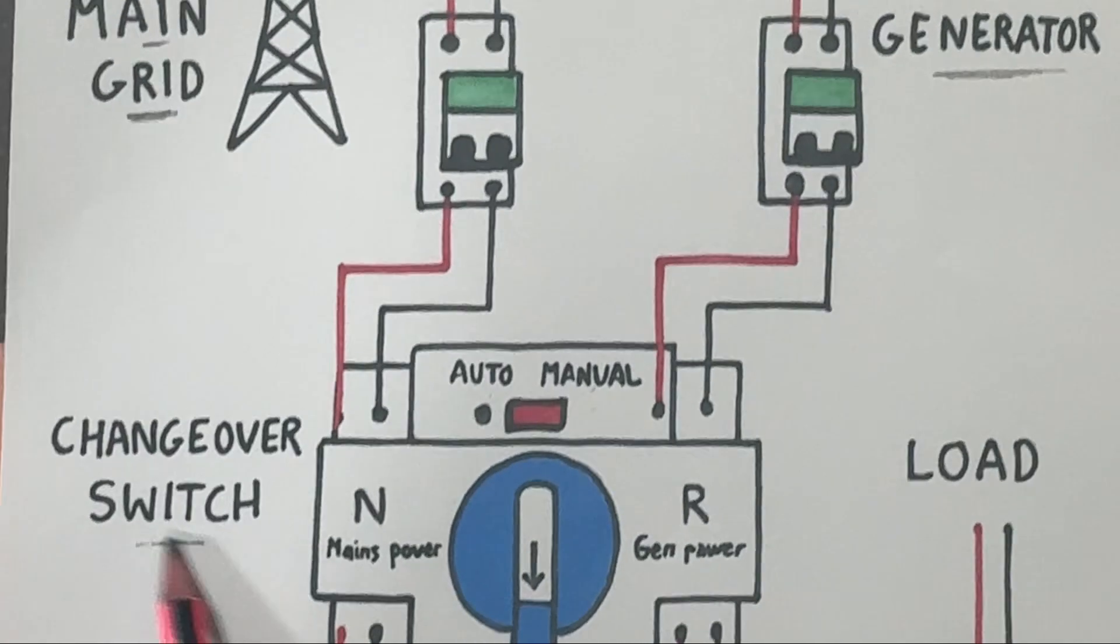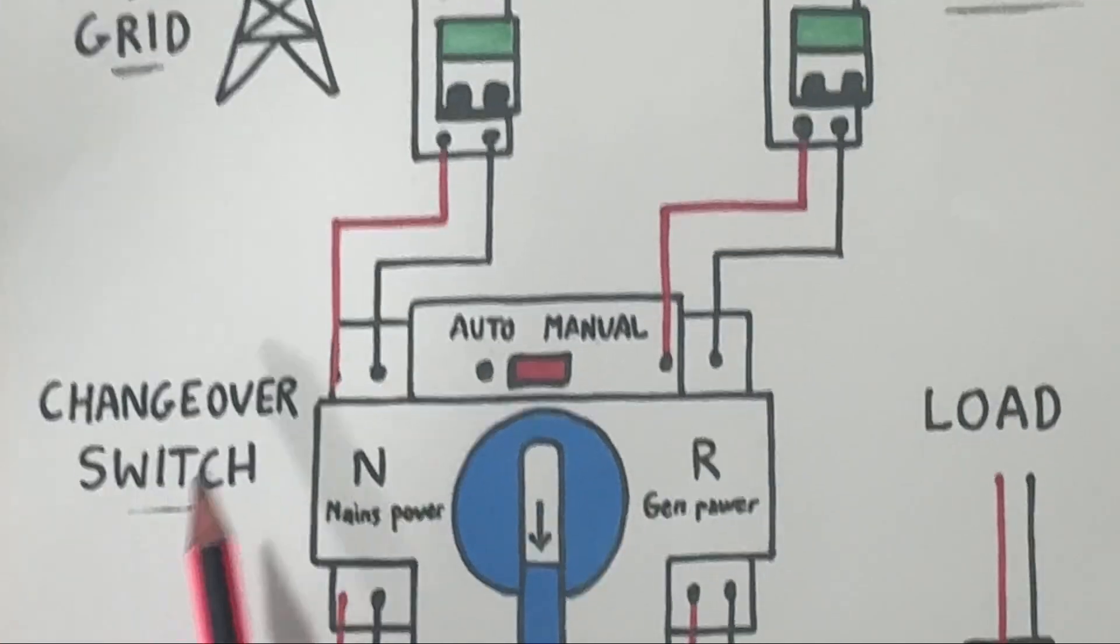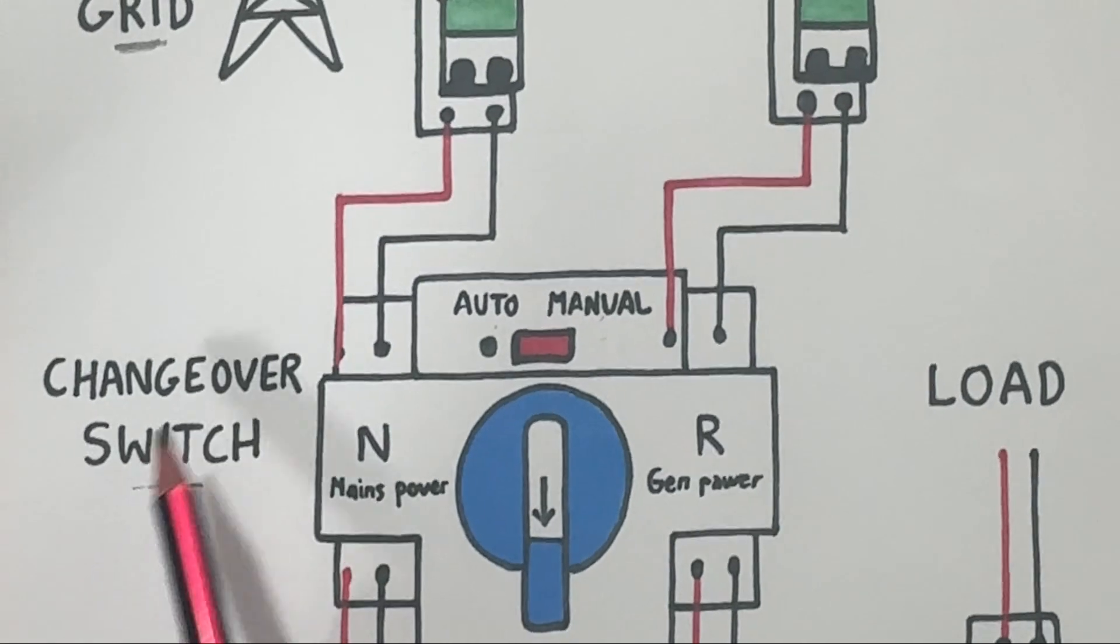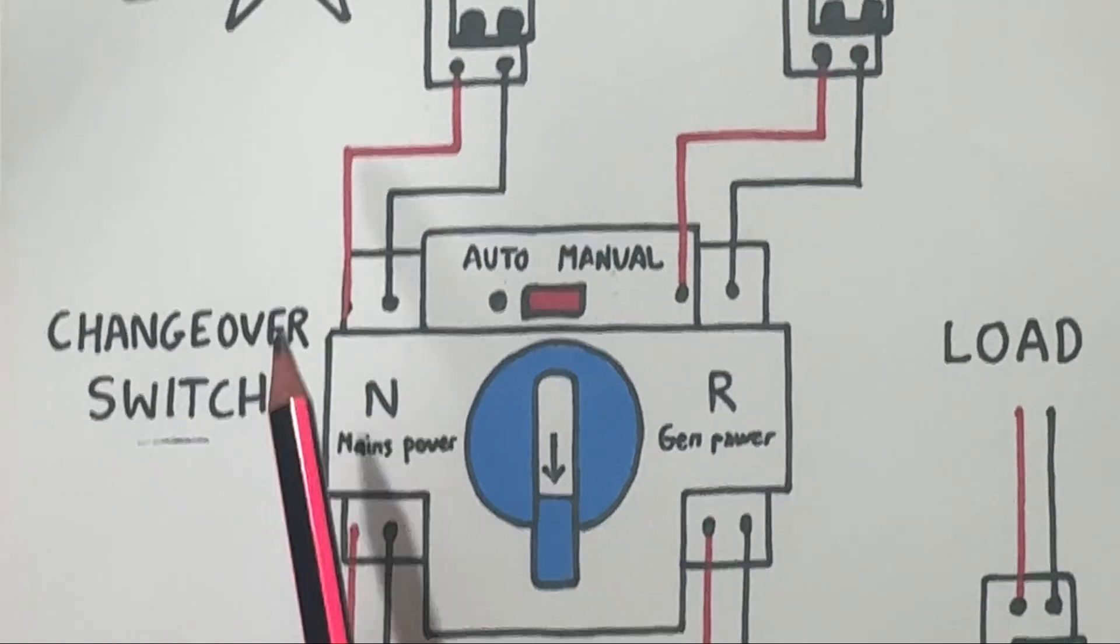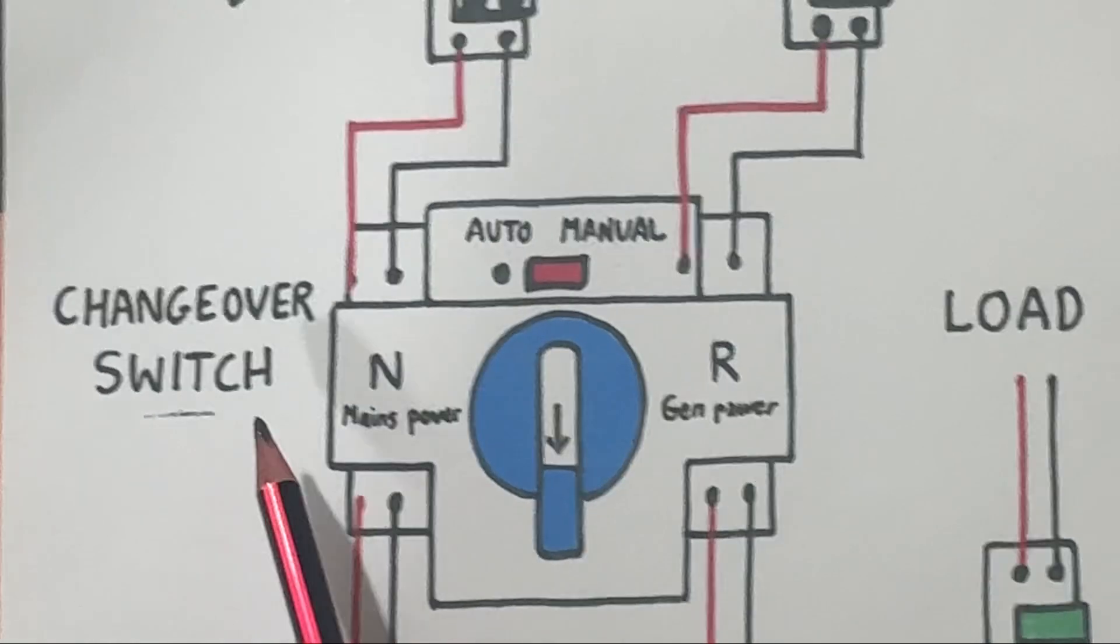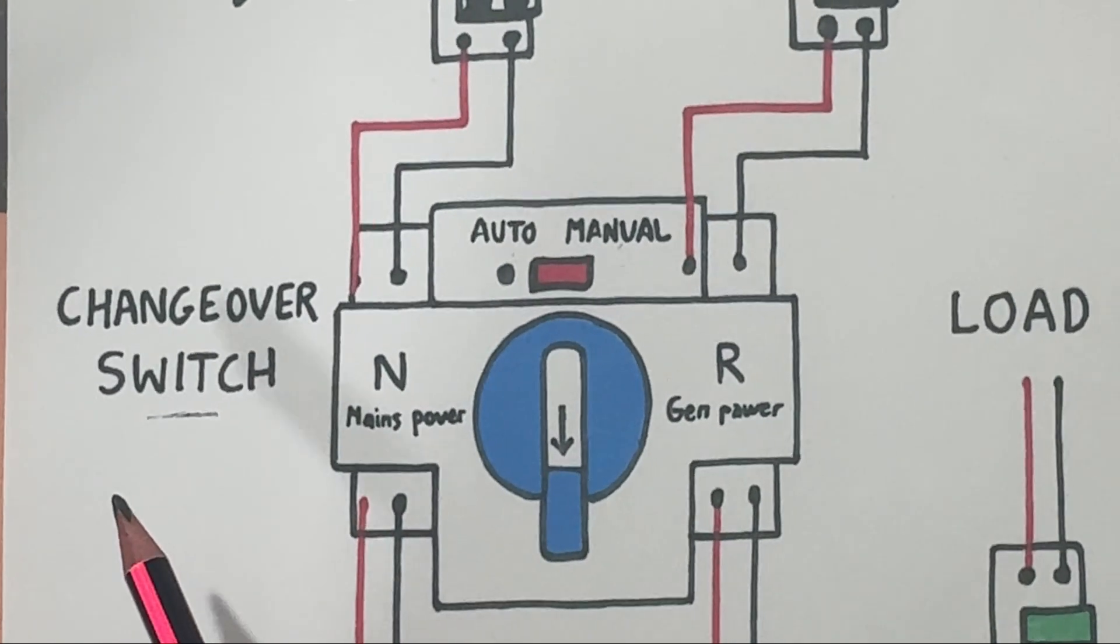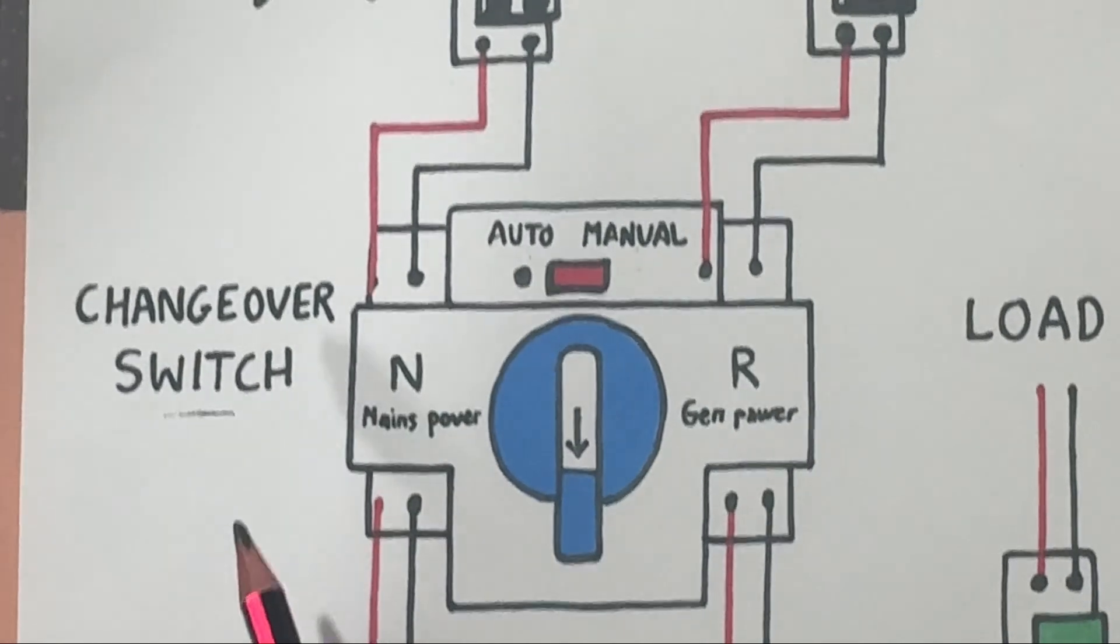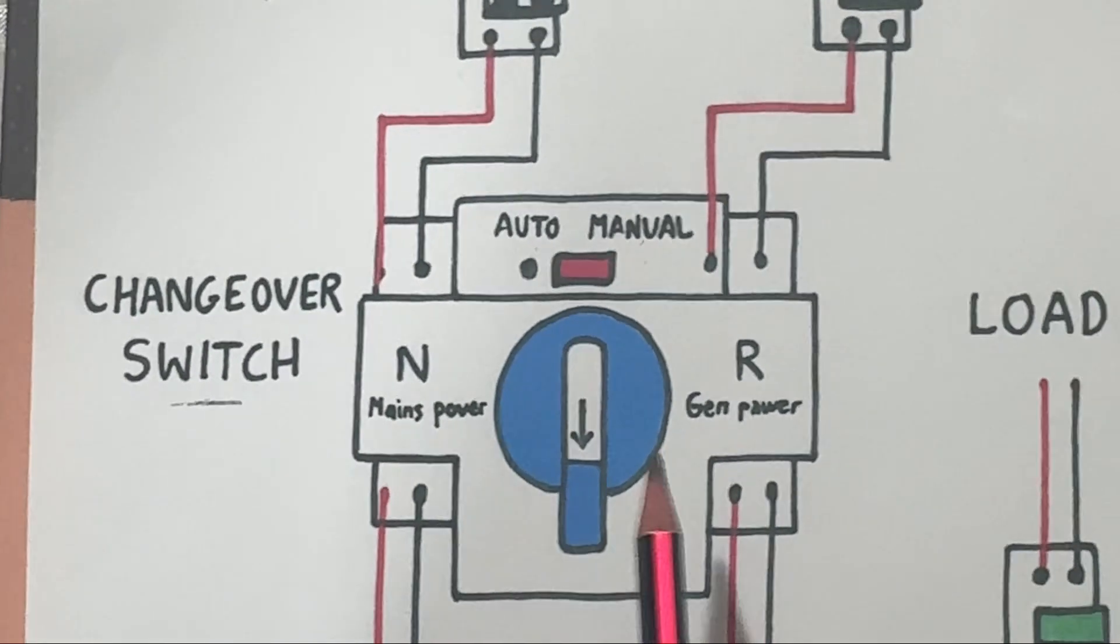Changeover switch. Now the heart of the system is the automatic changeover switch shown in the middle. This device continuously monitors the availability of grid power. Here's how it works.